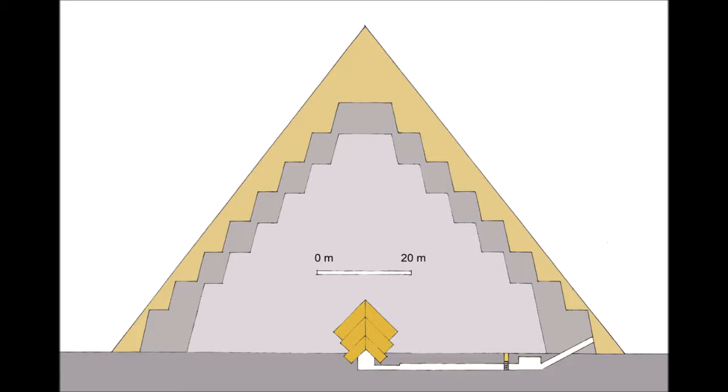The Pyramid of Neferikar, in ancient Egyptian 'the Ba of Neferikar', was built for the 5th dynasty Pharaoh Neferikarkai, referred to as Neferikar, in the 25th century BC. It was the tallest structure located on the highest site at the necropolis of Abusir, found between Giza and Saqqara, and still towers over the necropolis today.